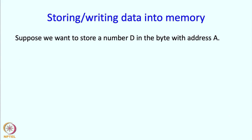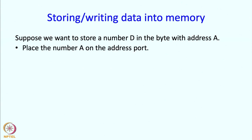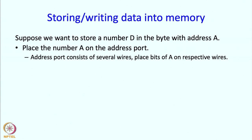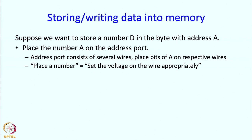How do you store or write data into memory? Suppose I want to store a number D, say 37, in the byte which has address A, say 57. On the address port I am going to store the number A. The address port consists of several wires, and placing A on the address port means thinking of A as a binary number and placing the bits of A on the respective wires. In a similar manner I can place the number D on the data port.